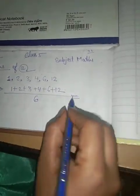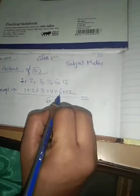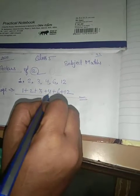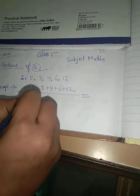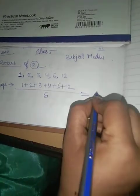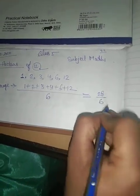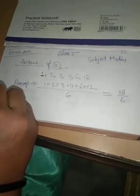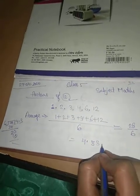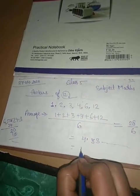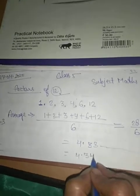Now let us plus it. 12 and 6, 18. 18 and 4, 22. 22 and 3, 25. 25 and 2, 27, and 1, 28 upon 6. Then divide it by 28 upon 6. Now 6 goes into 28 is 4.33 and so on. So we have to take 4.34.